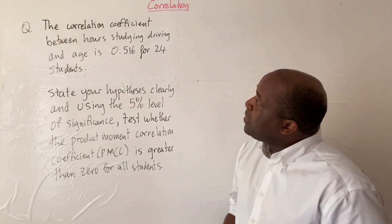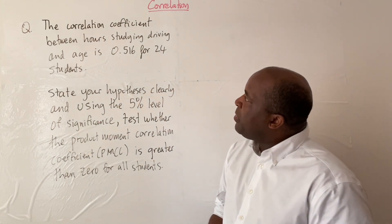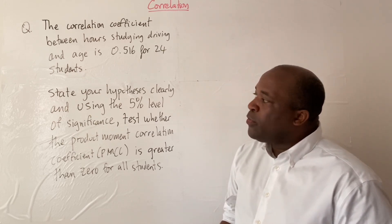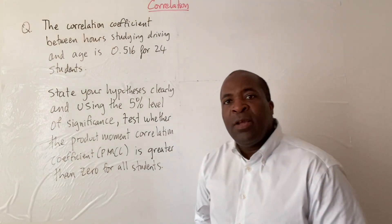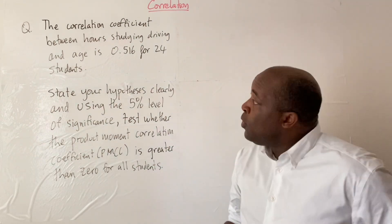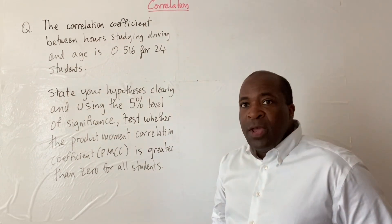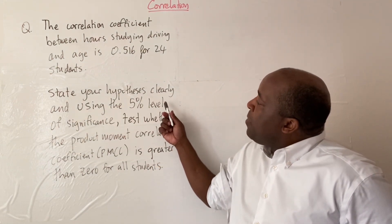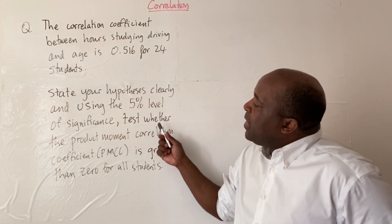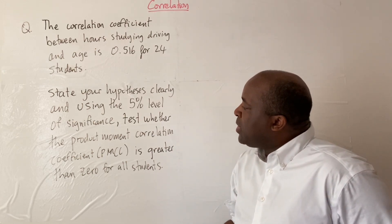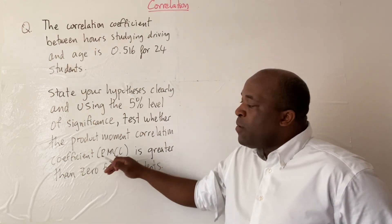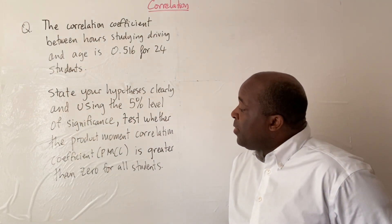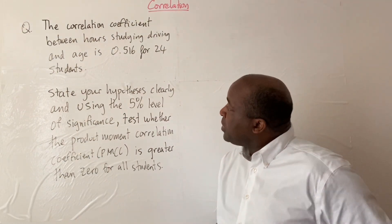In this question, we're told that the correlation coefficient between studying, driving, and age is 0.516 for 24 students. So we're given the sample correlation value of 0.516 and the number of students. We need to state our hypotheses clearly and, using a 5% level of significance, test whether the product moment correlation coefficient (PMCC) is greater than 0 for all students.